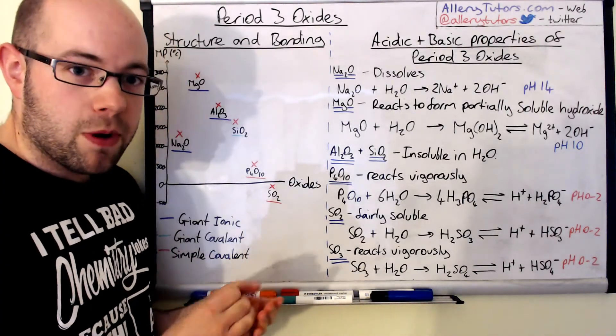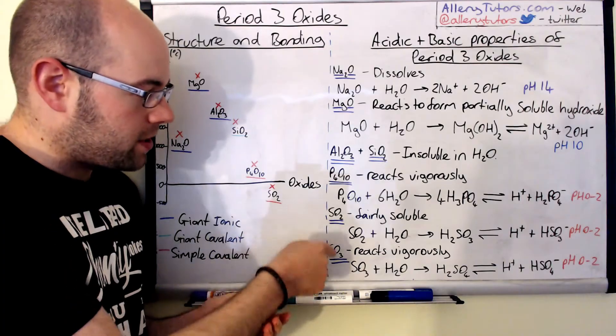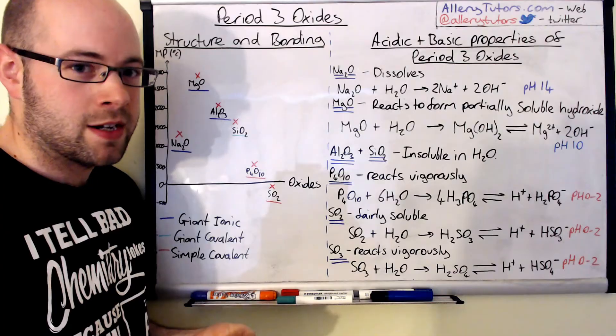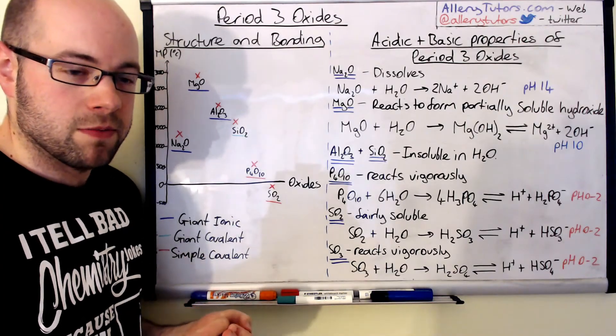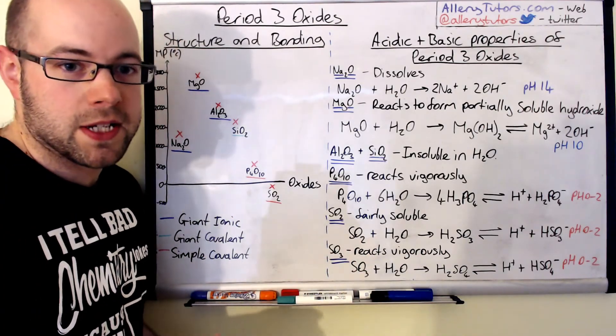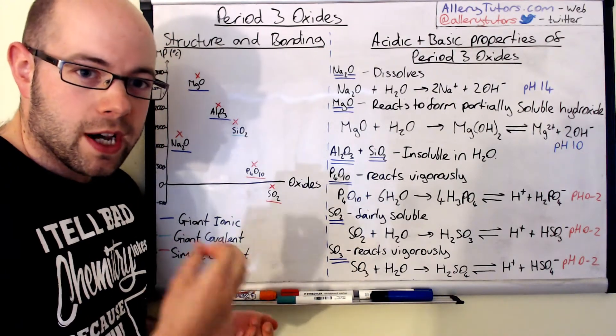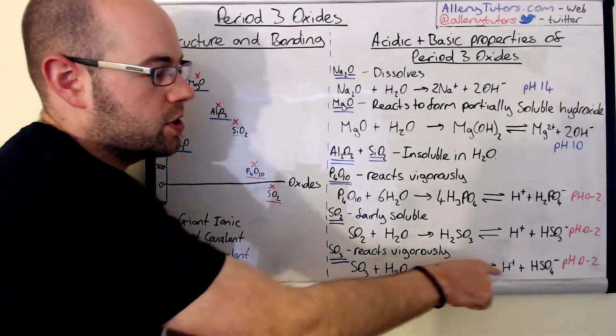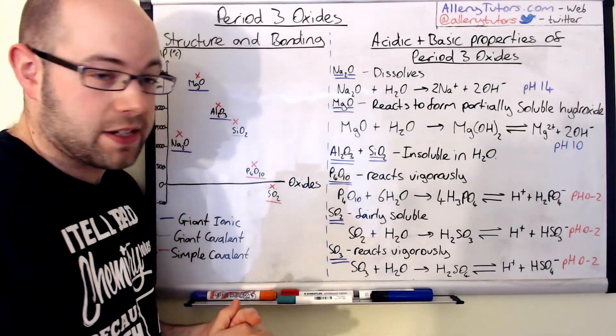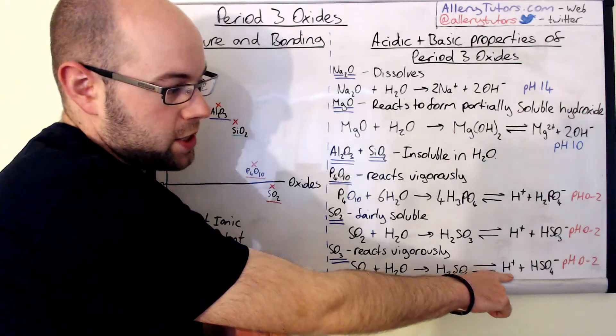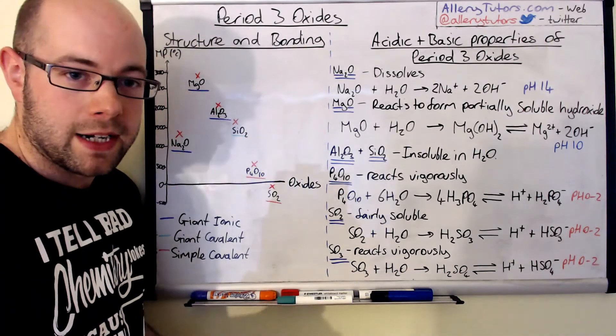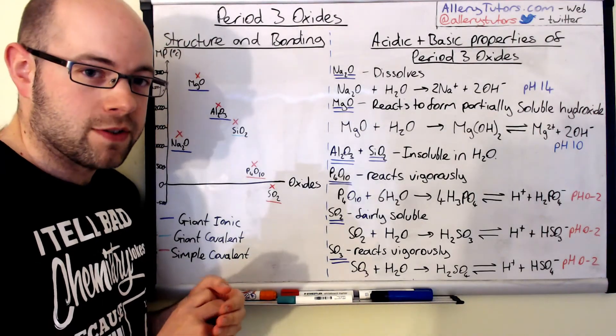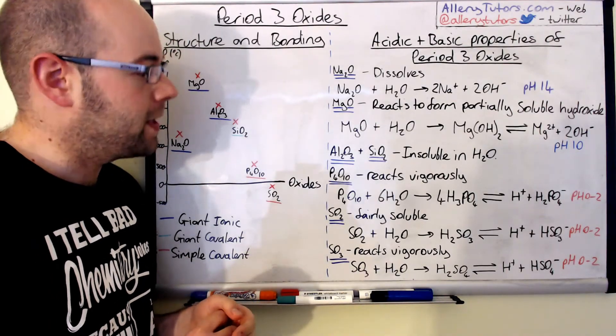If we go on to the last one which is SO3. Now this is a more oxidized version of sulfur dioxide. This is called sulfur trioxide. Now this does react vigorously with water and it will produce sulfuric acid which is H2SO4. And this is the acid that you may be more associated with. This will dissociate like sulfurous acid which will produce H plus and HSO4 minus. Dissociate quite readily just like sulfurous acid and produces a pH of somewhere between 0 and 2.